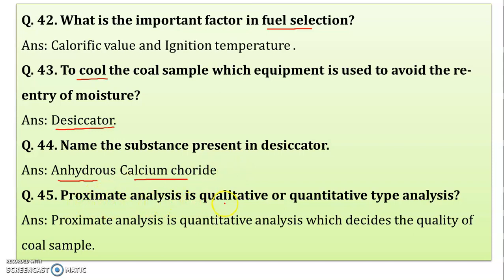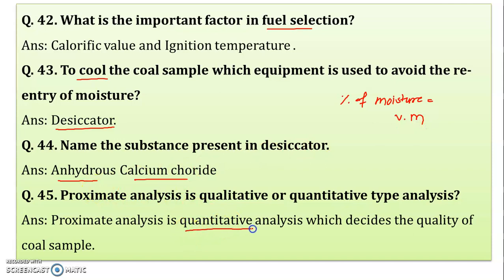Is proximate analysis qualitative or quantitative? In proximate analysis you determine percentage of moisture, percentage of VM — you are getting some quantity. So proximate analysis is a quantitative analysis. This quantitative analysis decides the quality of the coal sample.